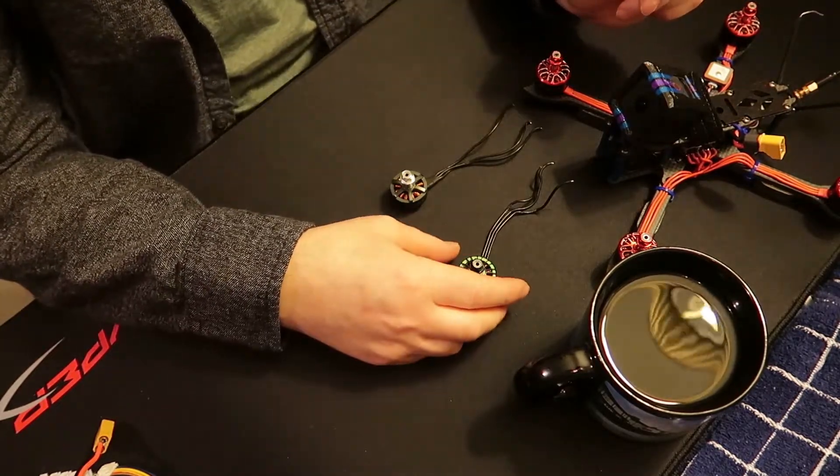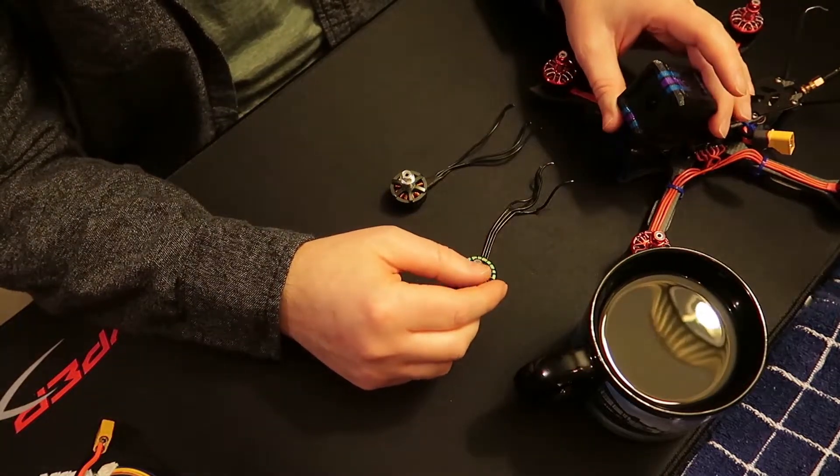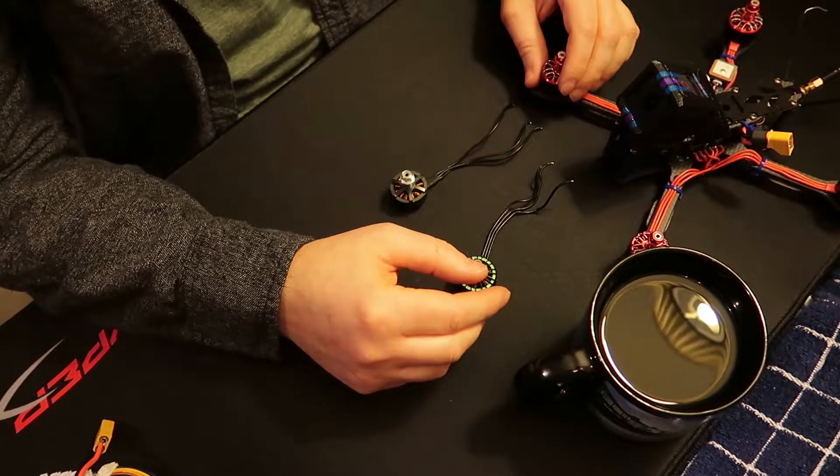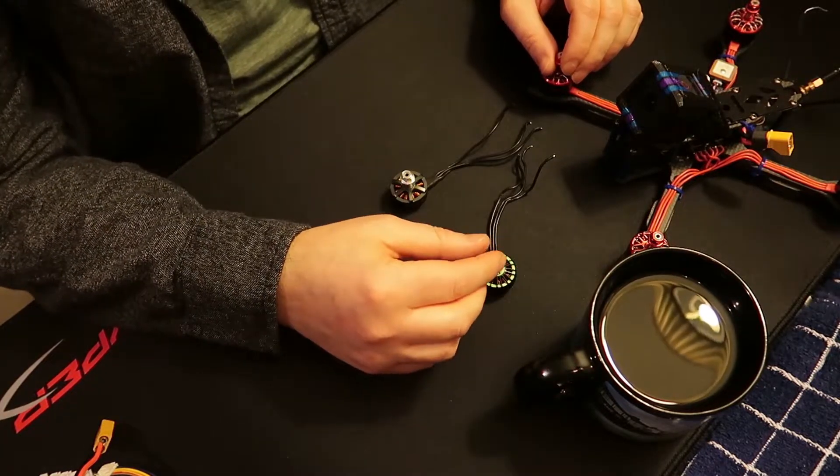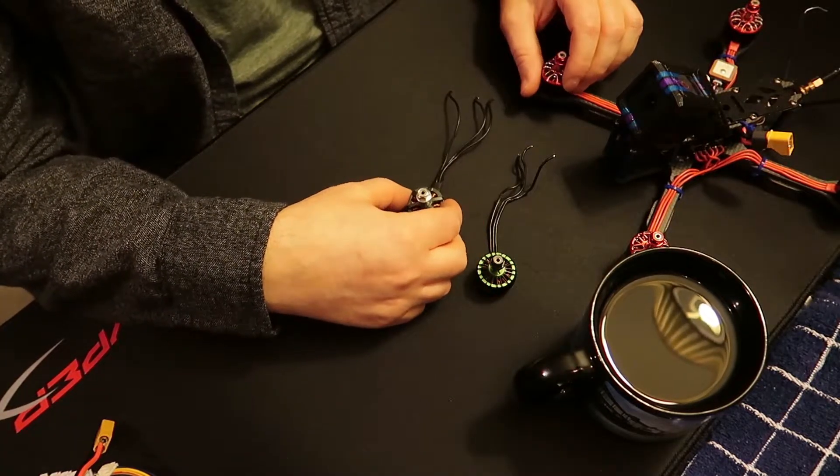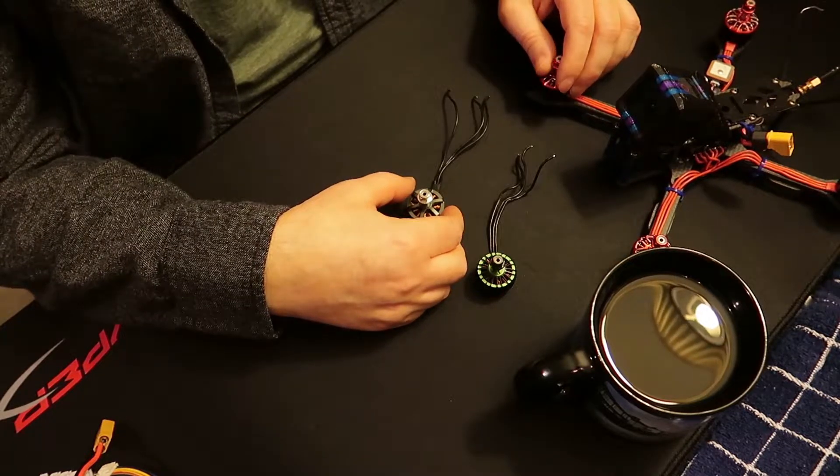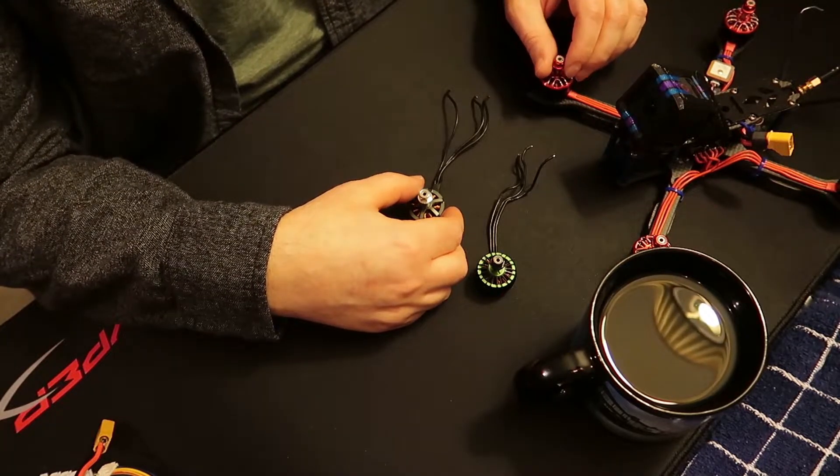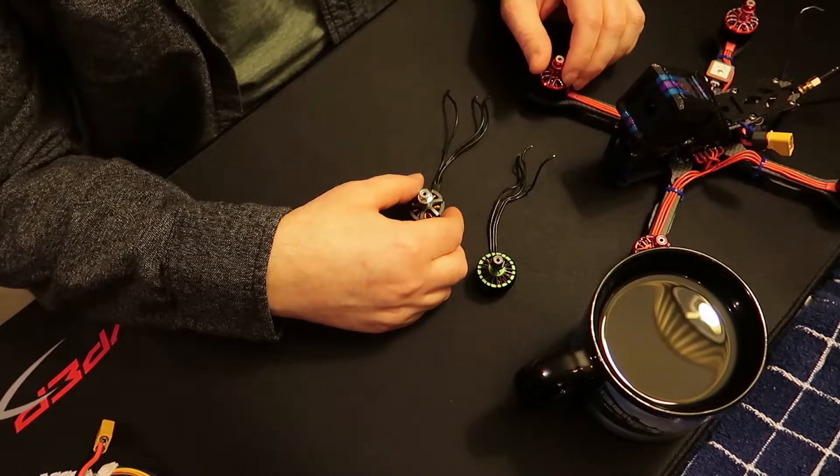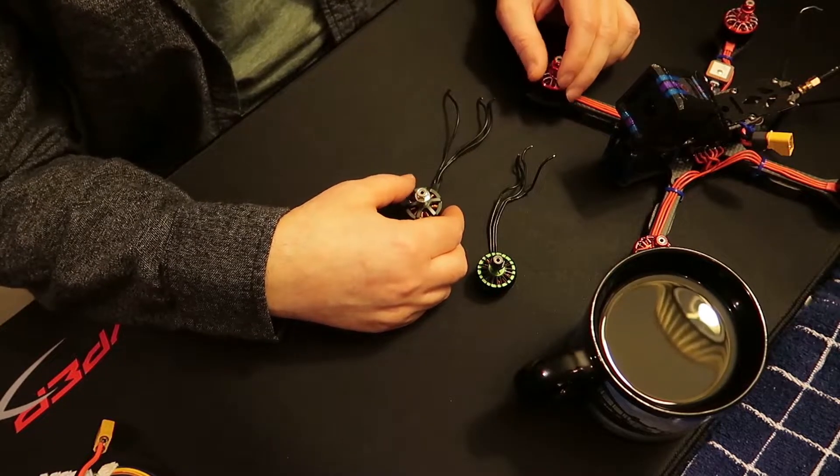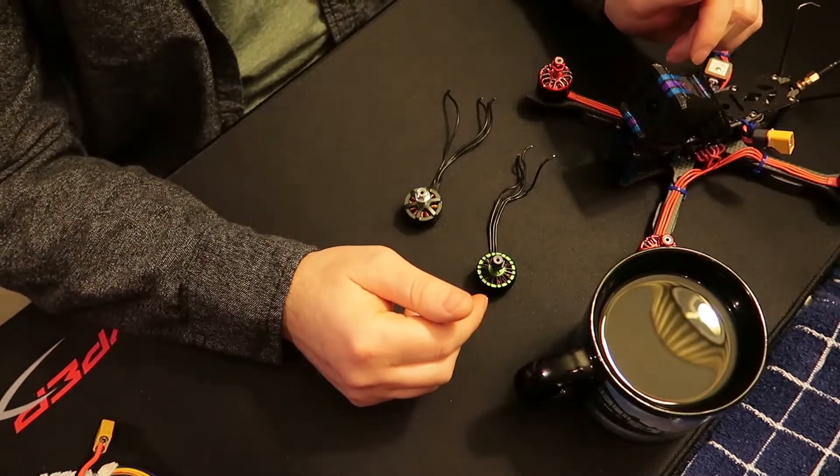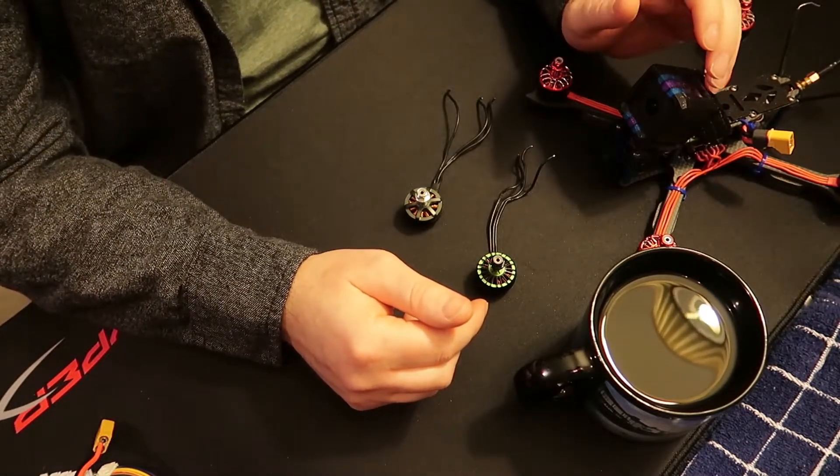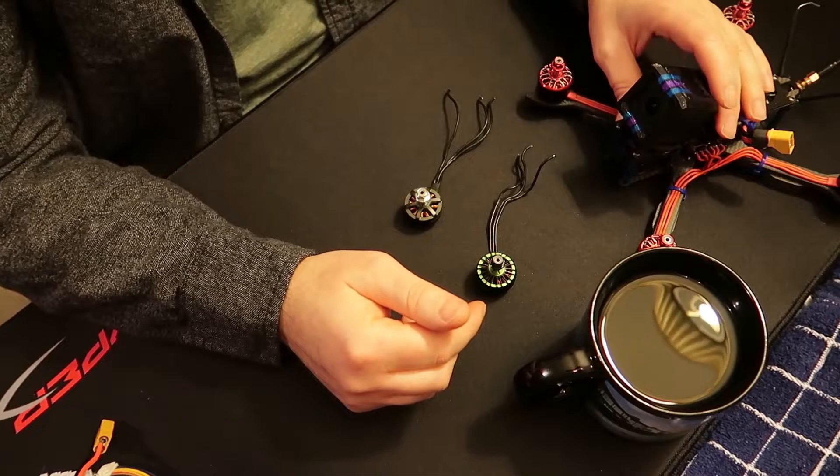What I have for you is a test on the 2208 E and non-E, the 2207, and the 2306 1700 KV. Now I do notice that the 2208s draw at a somewhat higher KV rating.